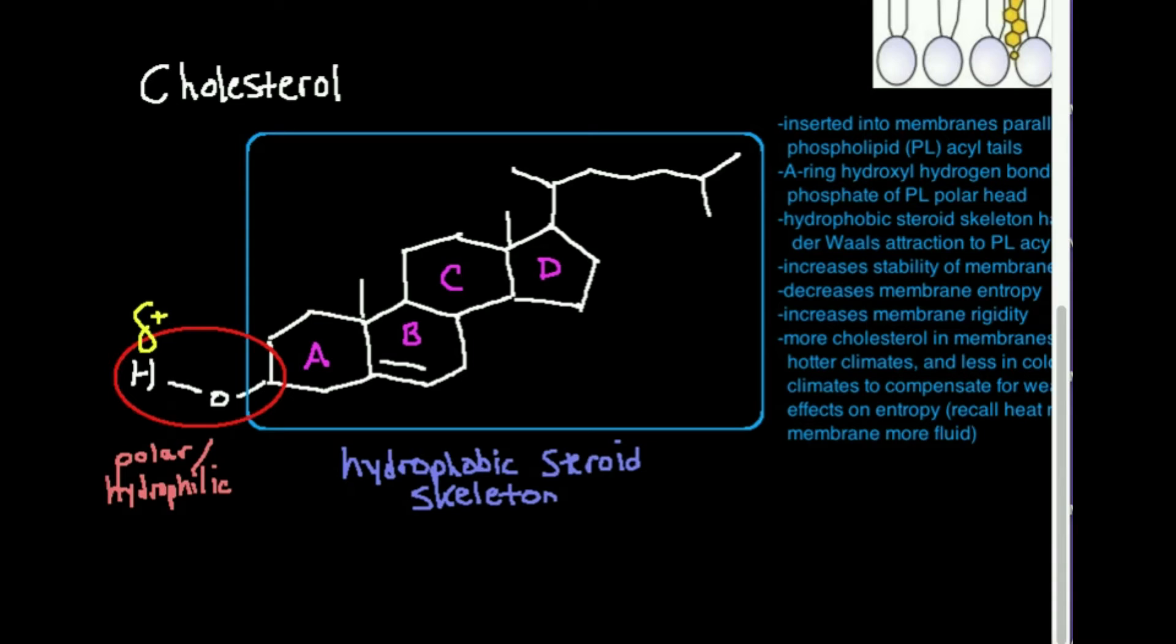You'll notice that between rings A and B there is a methyl group right here. Between rings C and D there's another methyl group right there. And then atop ring D there's what we call the cholesterol tail. It sort of looks like a tail and this part of the molecule adds to the hydrophobicity of it.